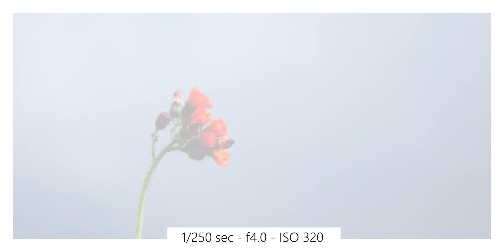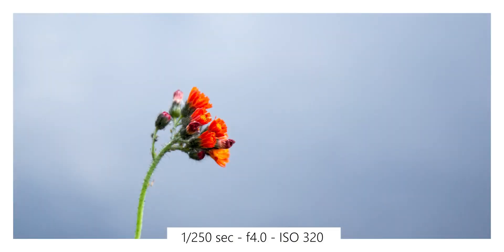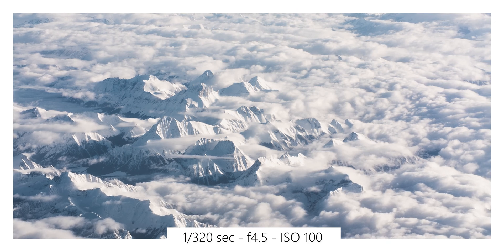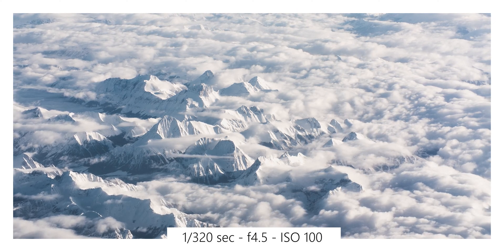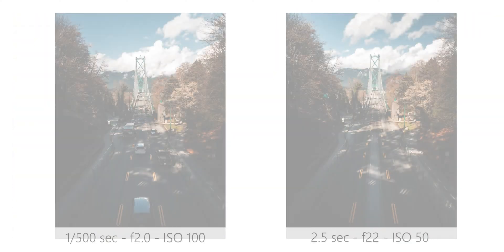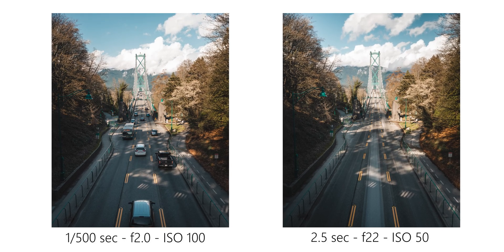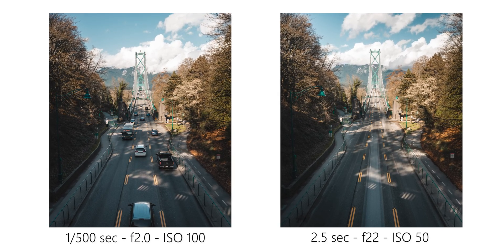Now that we've covered each setting, let's talk about how they all interact. All of photography is a giant game of compromise — you adjust each setting to compensate for what the others are doing. By combining shutter speed, aperture, and ISO in unique ways, you can radically change how an image looks.